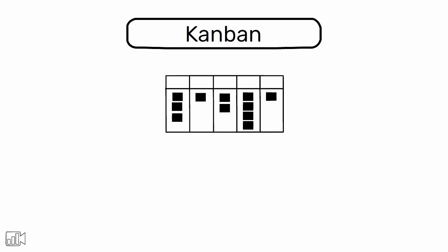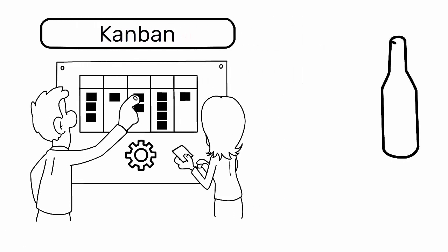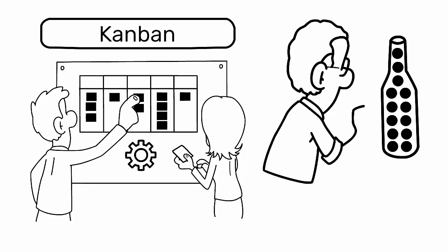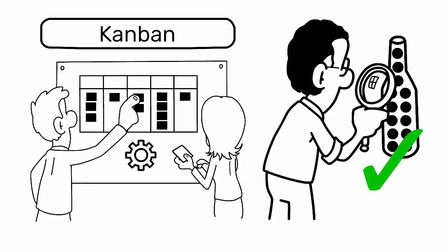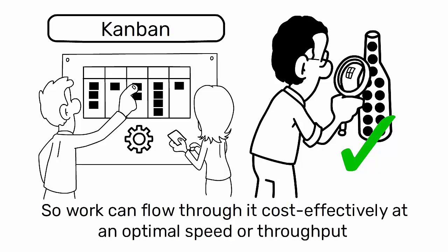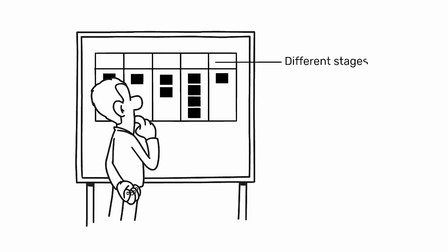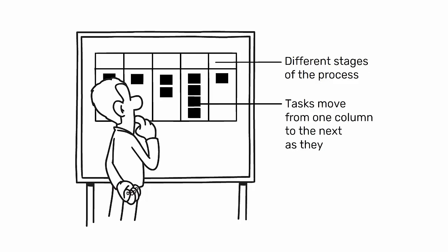Kanban, on the other hand, is a visual system for managing work as it moves through a process. It aims to identify potential bottlenecks in the process and fix them, so work can flow through it cost-effectively at an optimal speed or throughput. Kanban uses a board with columns representing different stages of the process, and cards representing tasks move from one column to the next as they progress.